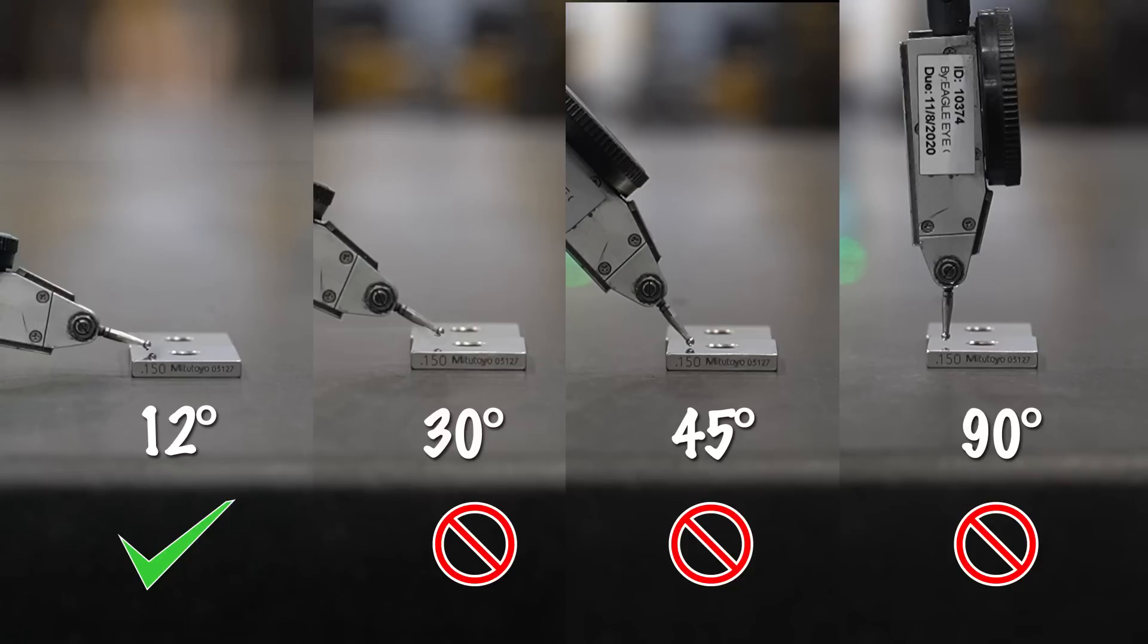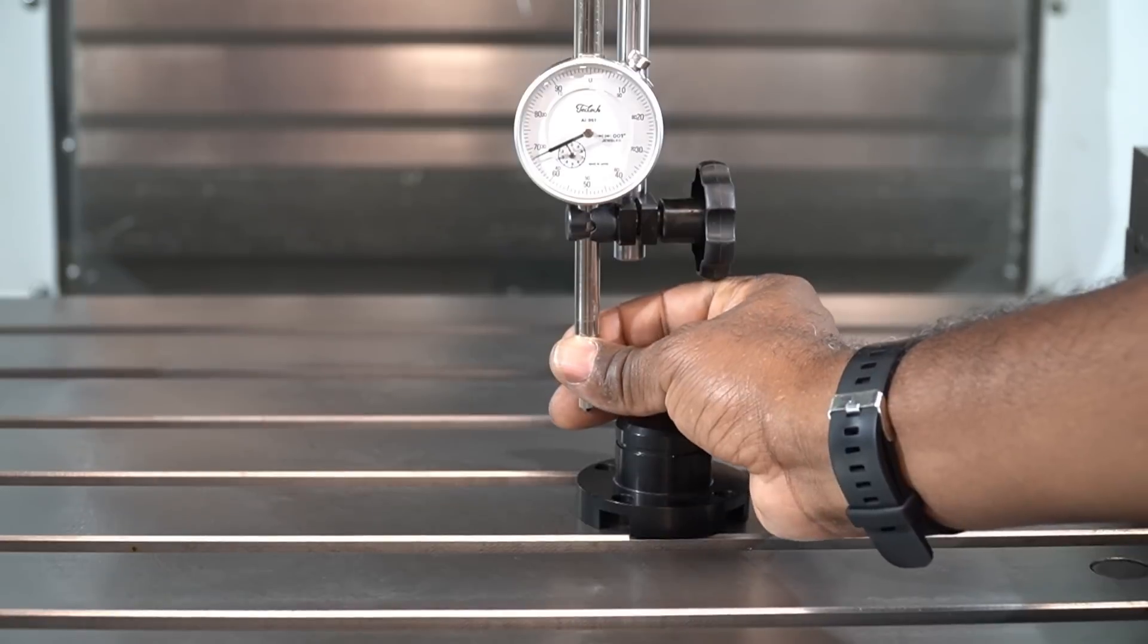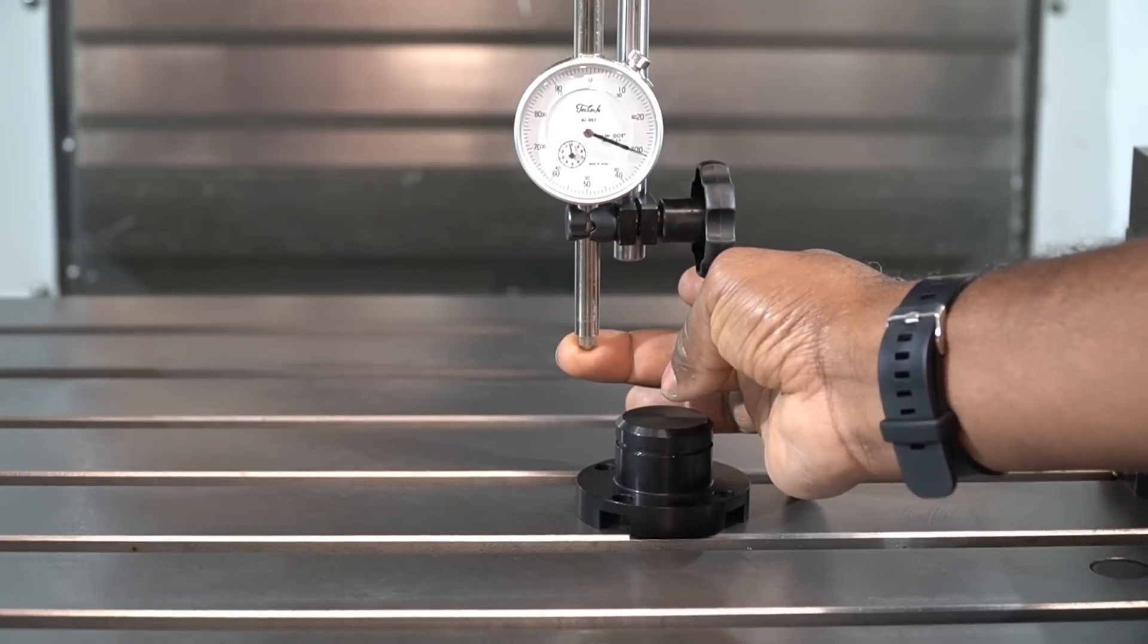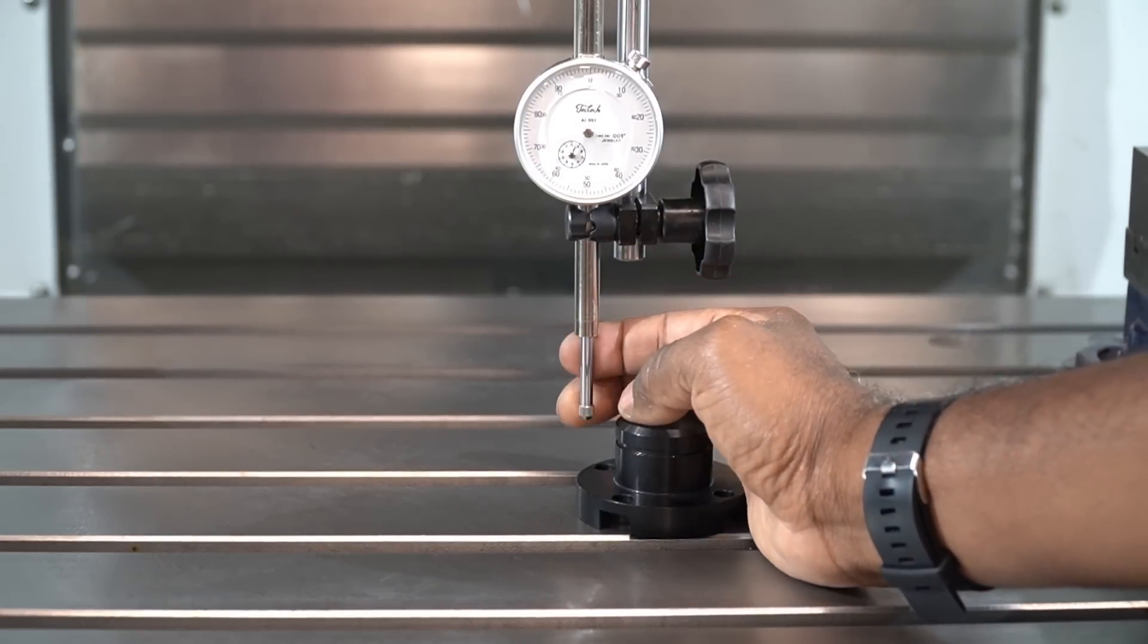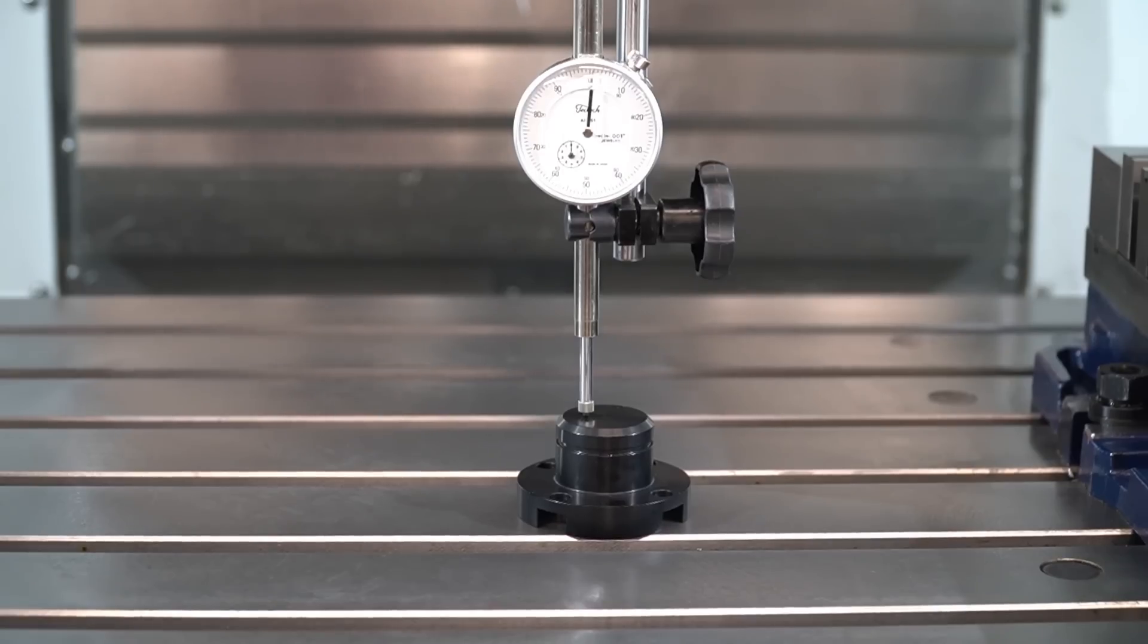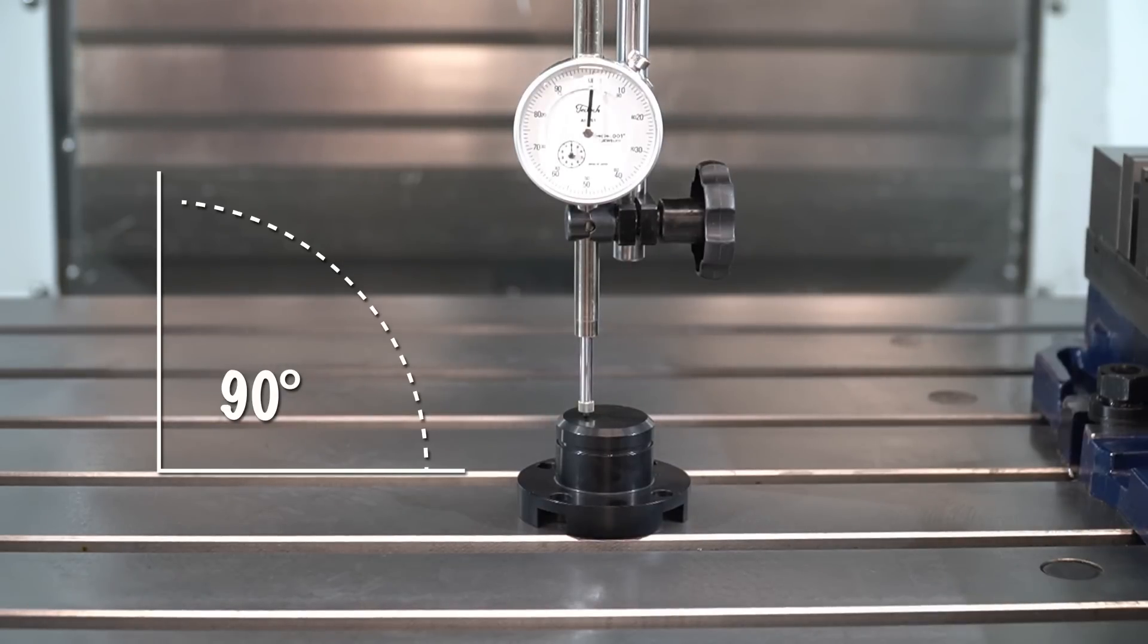If you're using an indicator made by a different manufacturer, be sure to know the angle at which you should set the stylus. Now with the drop indicator, the spindle reads linear movement as it moves into the indicator body. This instrument should always be mounted perpendicular or at 90 degrees to the surface being measured.